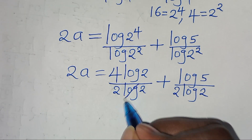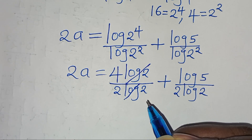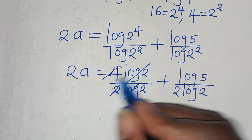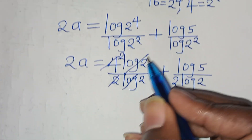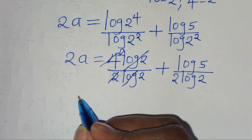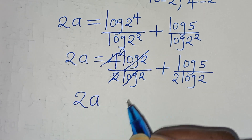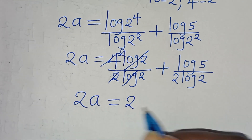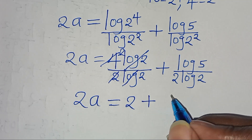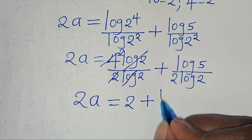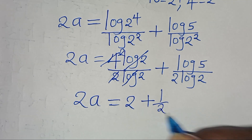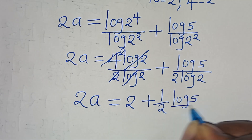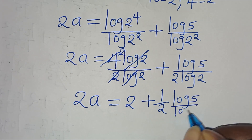Dividing log 2 by log 2 and 4 by 2 gives 2. So we have 2a equals 2 plus one-half times log 5 divided by log 2.